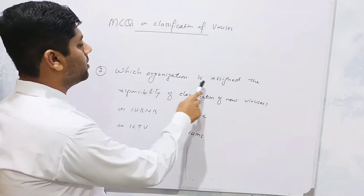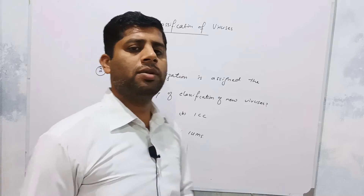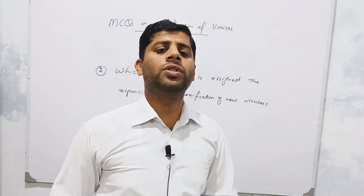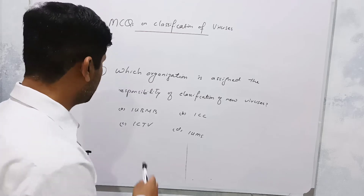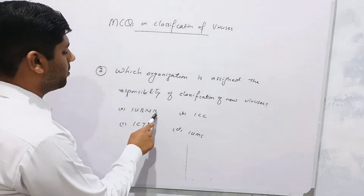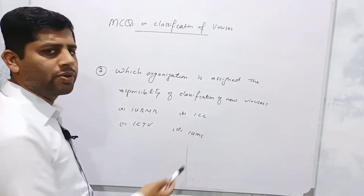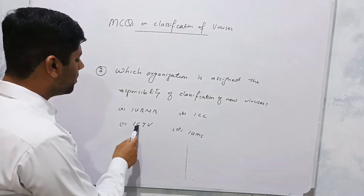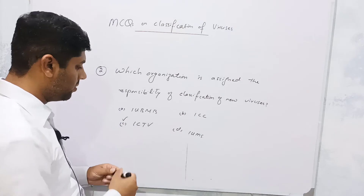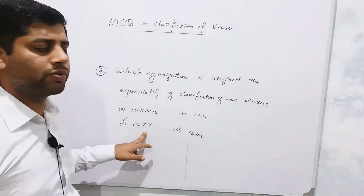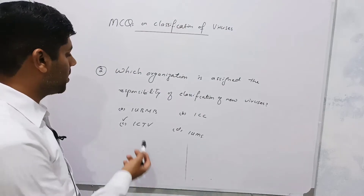The second question is: which organization is assigned the responsibility of classification of newly discovered viruses? The options include the International Union of Biotechnology and Molecular Biology — not related to virology; International Chamber of Commerce — related to business, so irrelevant; International Committee for Taxonomy of Viruses — this is the correct answer, the organization responsible for taxonomy or classification of newly discovered viruses; and the International Union of Microbiological Societies. For your ease, I will write their abbreviations.